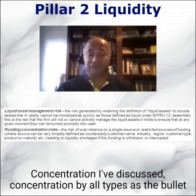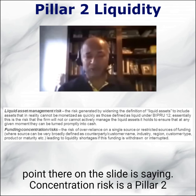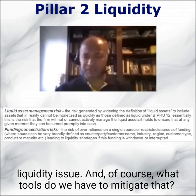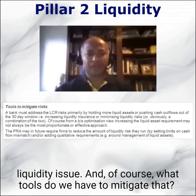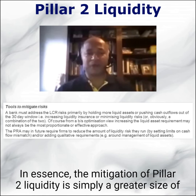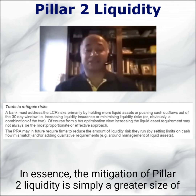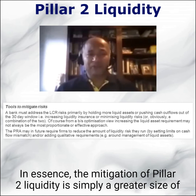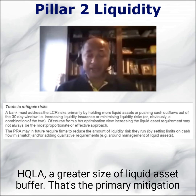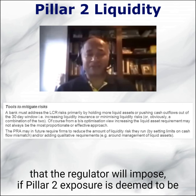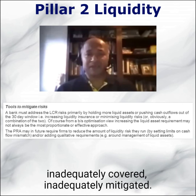Concentration by all types, as shown on slide 82: concentration risk is a Pillar 2 liquidity issue. How do we mitigate it? In essence, the mitigation of Pillar 2 liquidity is simply a greater size of HQLA — a greater size of liquid asset buffer. That's the primary mitigation the regulator will impose if it's deemed to be inadequately covered or mitigated.